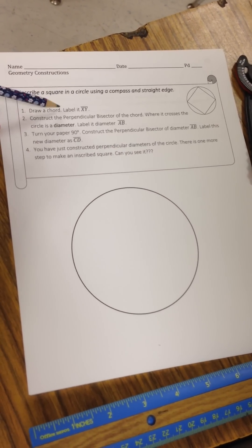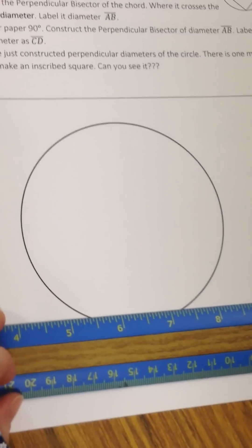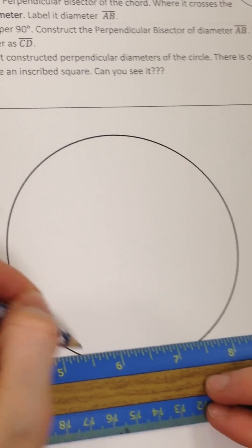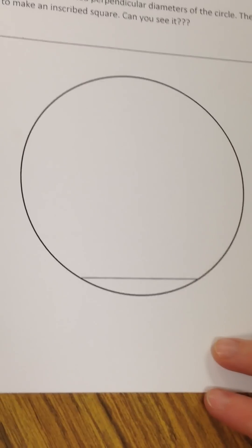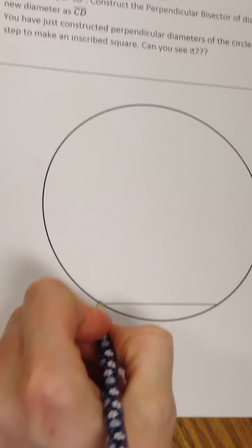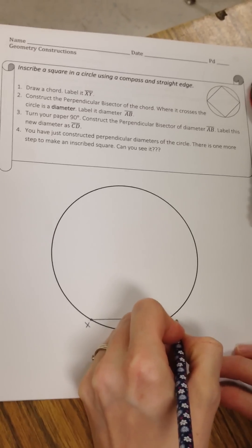So we're going to follow these directions carefully. First, we're going to draw a chord and label it XY. You can put it wherever you want, but I always like to put it near the bottom. It just needs to connect two points on the circle. We're going to label it X and Y.